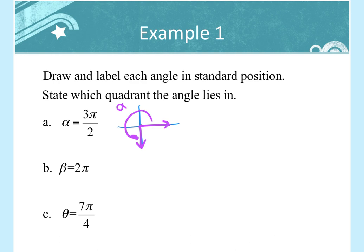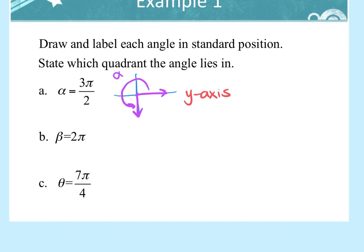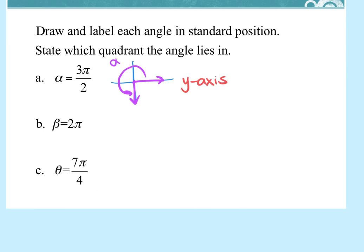What quadrant does 3π/2 lie in? It's a trick question — the terminal side is on the negative y-axis, so it's not in a quadrant; we would call it the y-axis. For beta, that's 2π, which is all the way back around, and that would be the x-axis.